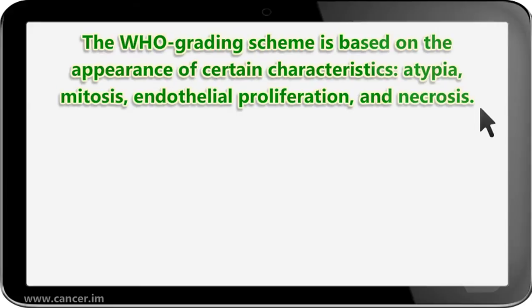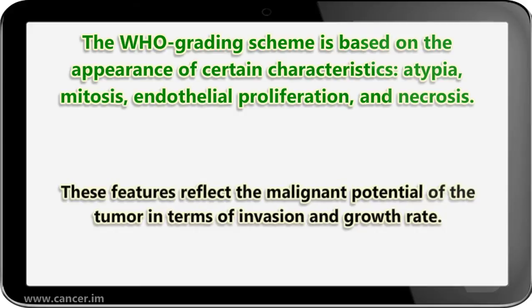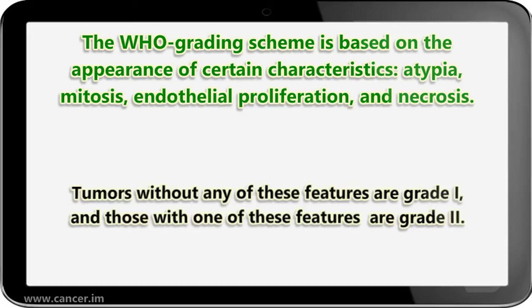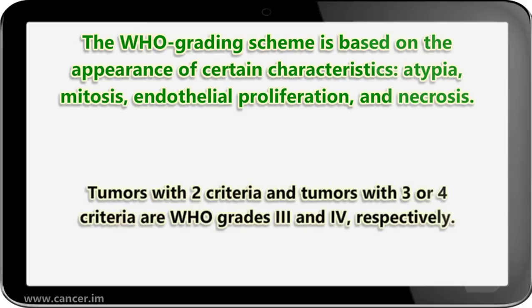The WHO grading scheme is based on the appearance of certain characteristics: atypia, mitosis, endothelial proliferation, and necrosis. These features reflect the malignant potential of the tumor in terms of invasion and growth rate. Tumors without any of these features are grade I, and those with one of these features are grade II. Tumors with two criteria are WHO grade 3, and tumors with three or four criteria are WHO grade 4, respectively.